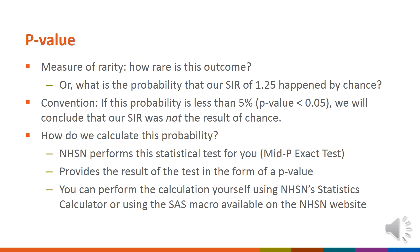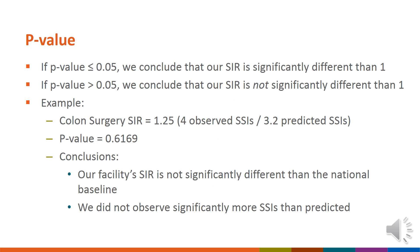Within NHSN's SIR reports, you will see that the p-value is already calculated for you, so that you can easily interpret whether your SIR is significantly different than the national baseline. You may also perform this calculation on your own using either the NHSN statistics calculator or the SAS macro, available at the end of this presentation. In the previous example, our facility had a colon SSI SIR of 1.25. After reviewing the NHSN SIR report, we determined that the p-value was 0.6169. This p-value is above 0.05, and therefore we conclude that our facility's SSI-SIR was not significantly different than the national baseline.